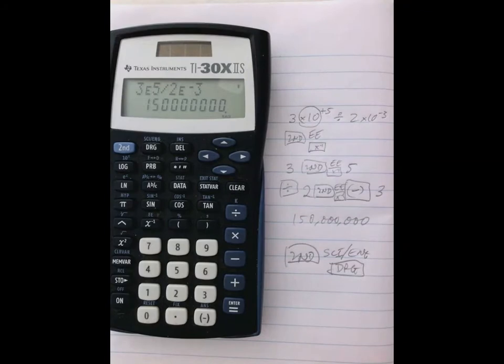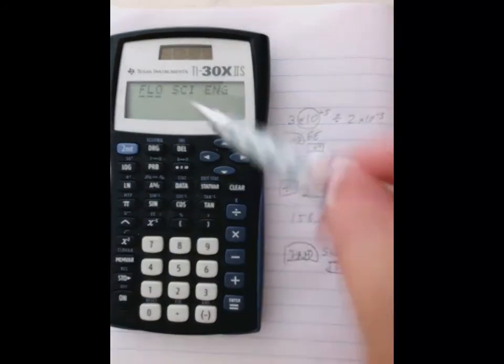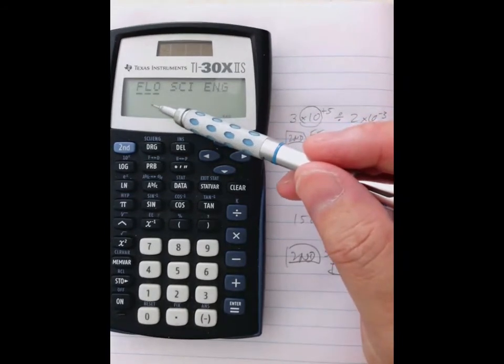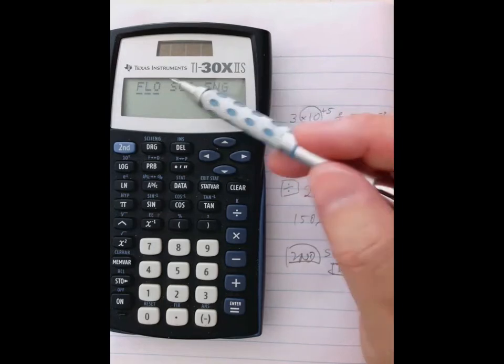So press that second DRG. There are three choices here. The common format is called floating point with long digits or long decimals, and it's the default.